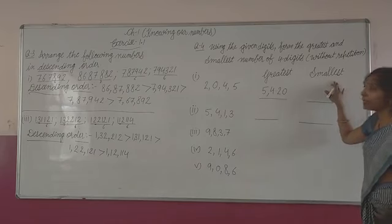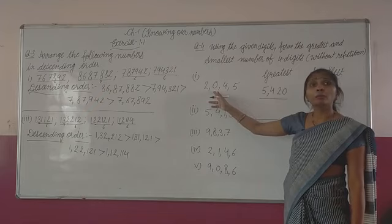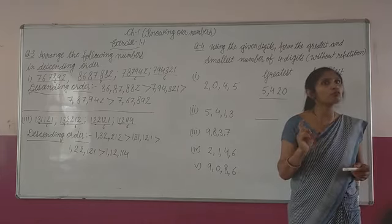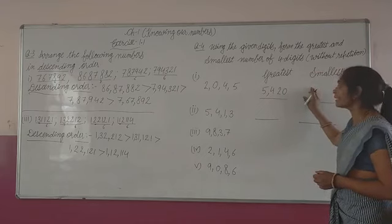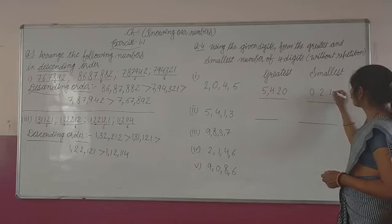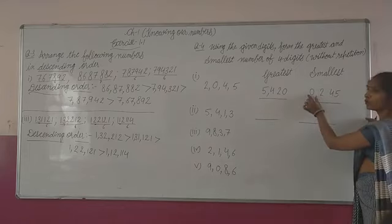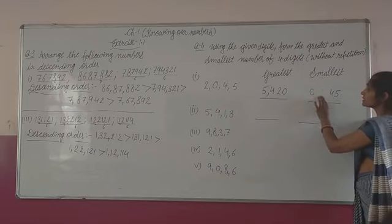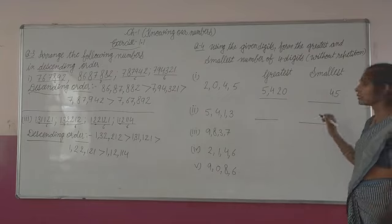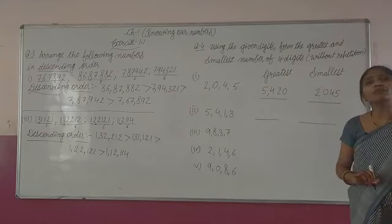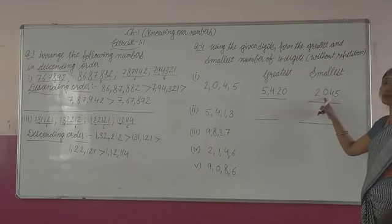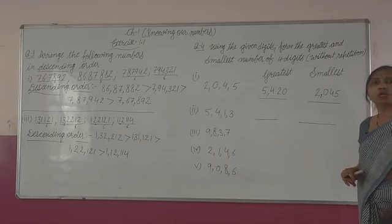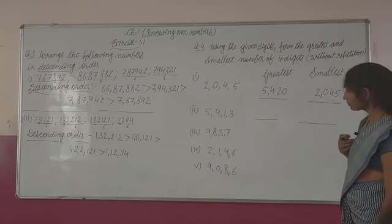Now we have to form the smallest number. The smallest digit is zero, but when forming the smallest number, zero is always on the second higher place — never on the highest place. Because if we write zero, two, four, five, then zero has no value there and the number becomes only three digits: 245. So for this four-digit number, write zero on the second higher place. The number formed is 2,045 — two thousand forty five.